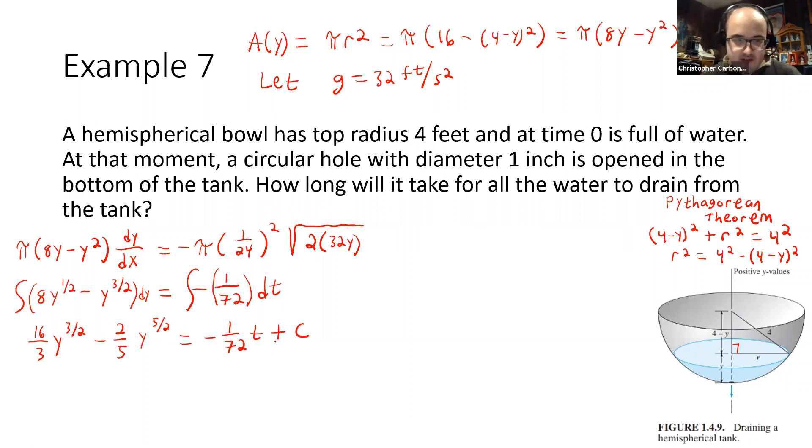To obtain that value of c, we were told right here about the radius of four feet at time zero. So that means that our equation here of y(0), we would have this equal to four. So because of that, we could then put zero in for all of these t's. So solving this would actually give us 16 thirds times four to the three-halves power minus two-fifths times four to the five-halves power is equal to negative 1 over 72 times zero plus c.